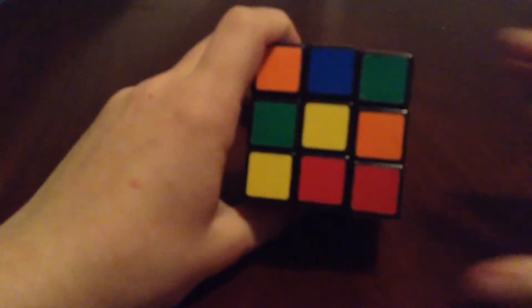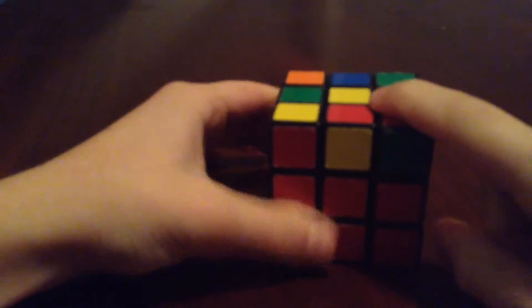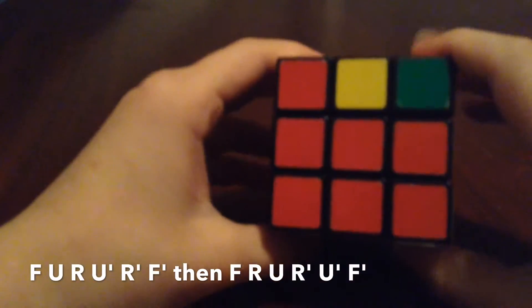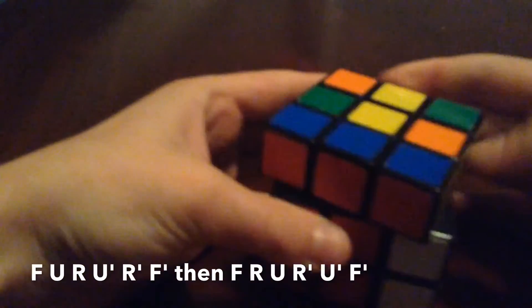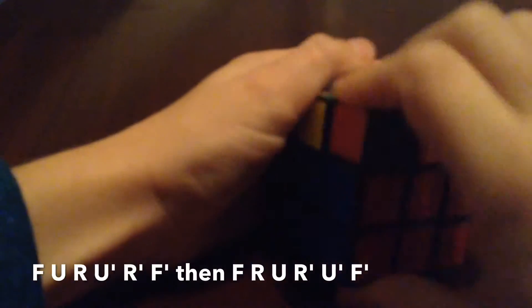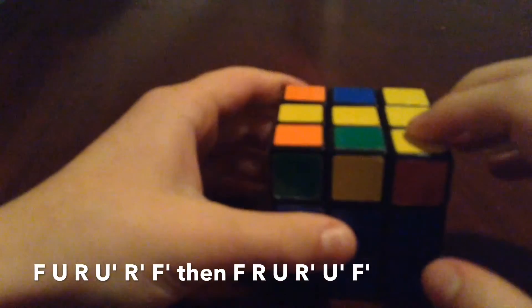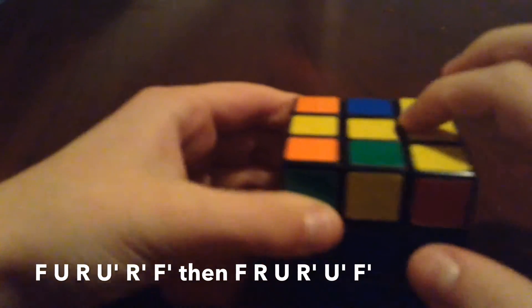If there is just the white center in here, you want to combine both of those and you can do it in either order. I like to do the algorithm F, U, R, U counterclockwise, R counterclockwise, F counterclockwise. And you can see there is a bar, and you want to correct that by making it parallel to you.